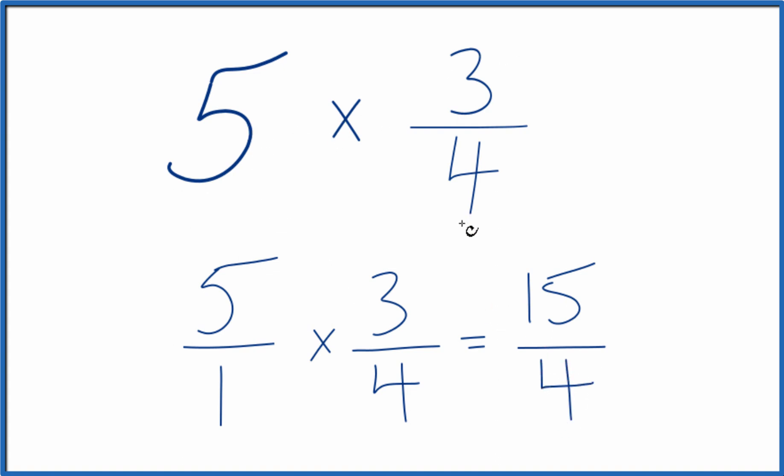So 5 times 3 fourths equals 15 fourths. This is an improper fraction. 15 is larger than 4, so you could change it to a mixed number.